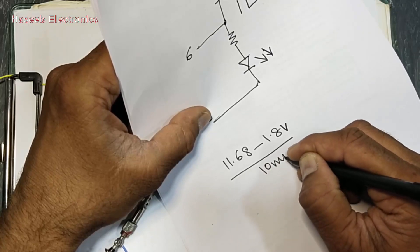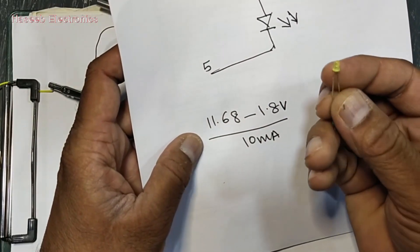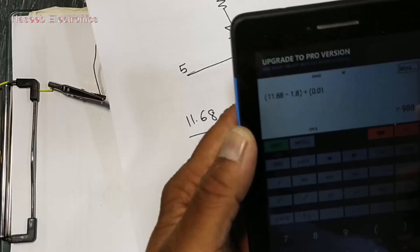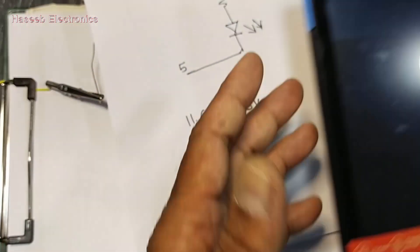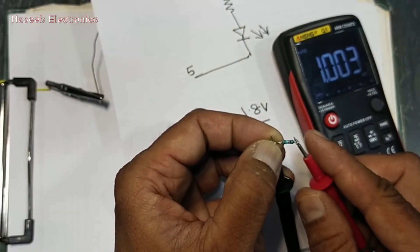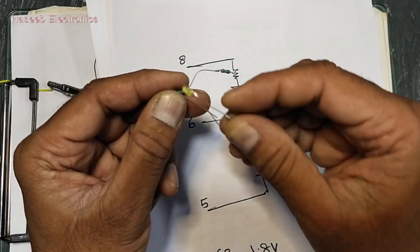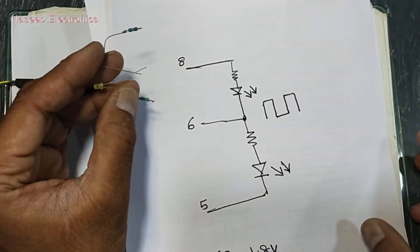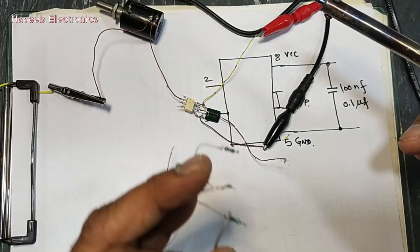We have 11.68V supply and will use a 1.8V, 3mm LED at 10 milliamperes. Calculating the series resistor: R = (V_supply − V_LED) / I_LED = (11.68V − 1.8V) / 0.01A = 988 ohms. It is difficult to find exactly 988 ohms, so I am using 1 kilohm which is close to this value. Connect the positive side to pin 8, and the second LED in the opposite direction. Use a 1kΩ resistor in series with each LED. I am making this as a prototype — you can also mount it on an IC socket for a better result.